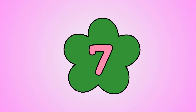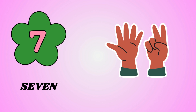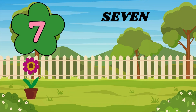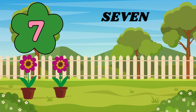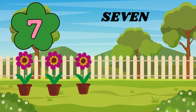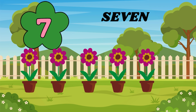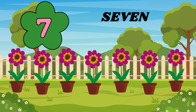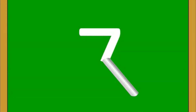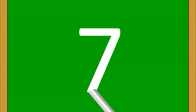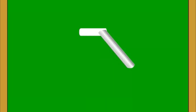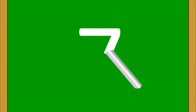Now, learn next number. 7. Let's count. 1, 2, 3, 4, 5, 6, 7. 7 flower pots. Would you like to know how to write number 7? Look. 7. Come on, let's try one more time. 7.